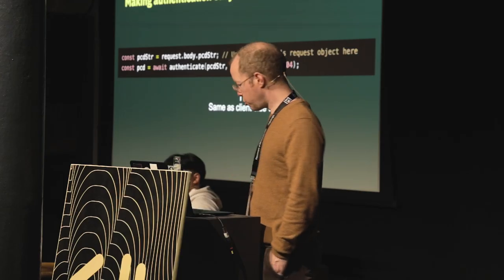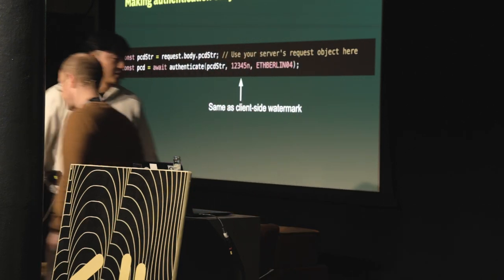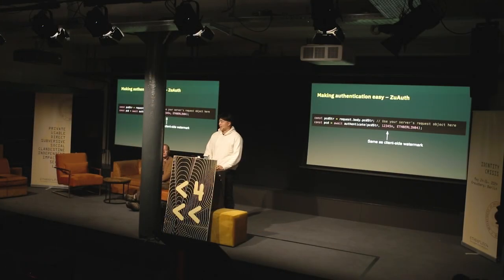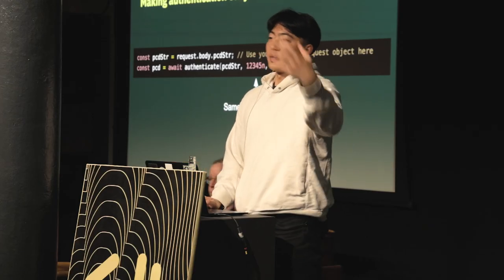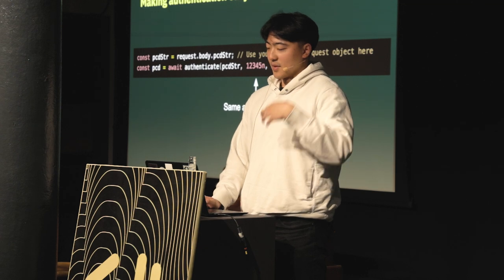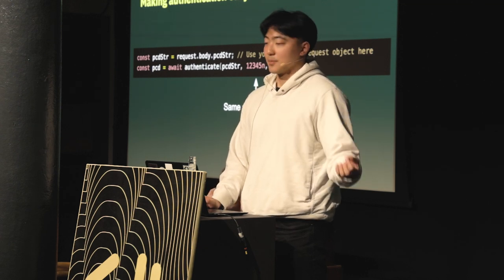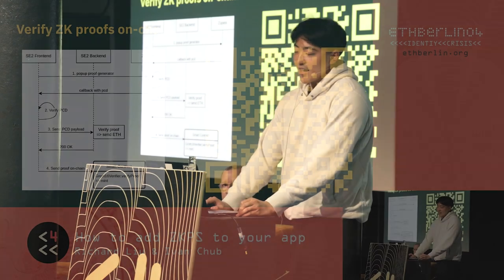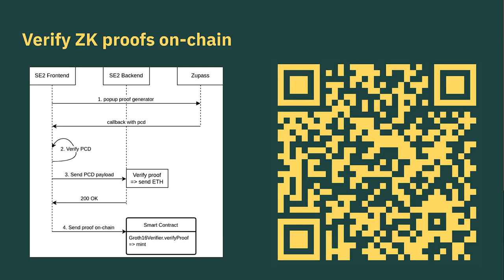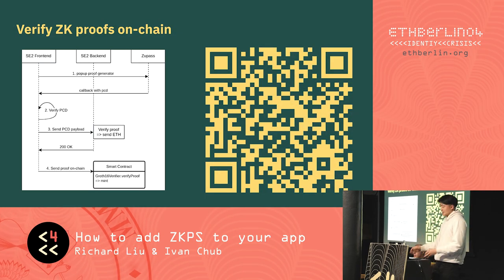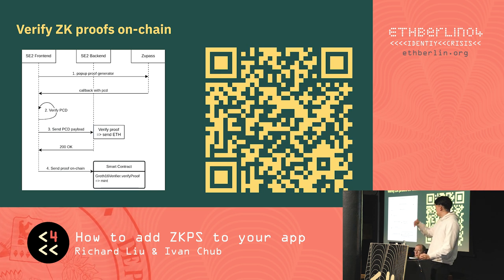So that explains everything about how to authenticate in ZooPass. Now back to Richard. That gives a sense of how to request a ZK proof on the ZooPass client and verify it within a web server. But maybe you want to go one level beyond this — beyond a web server. Maybe you want to make it a bit more trustless or interact more with the chain. So something we're excited to introduce is that you can also verify these ZK proofs on chain. Here's a QR code that leads to a library that one of Austin Griffith's Build Guild devs built to verify these ZooPass proofs on chain.